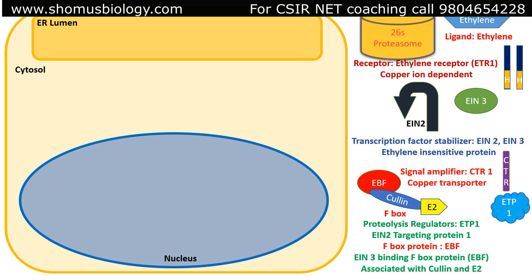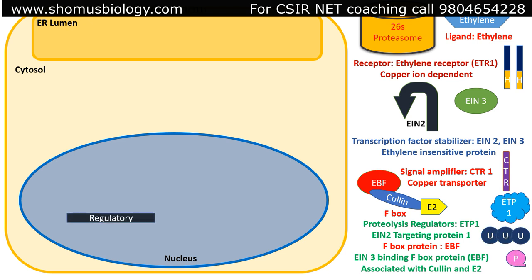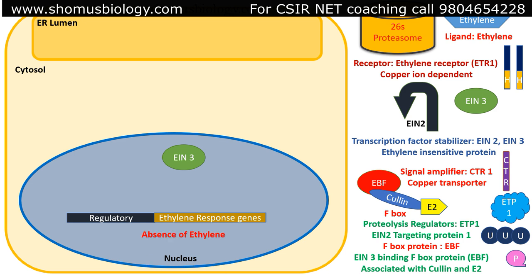There is also the 26S proteasome complex, present in both the nucleus and cytoplasm. Normally, in the nucleus there are regulatory regions upstream of the ethylene response genes. In normal situations, EIN3 acts as a transcription factor, causing transcription of ethylene response genes into mRNA, which is then transported into the cytosol and translated into the required protein products.